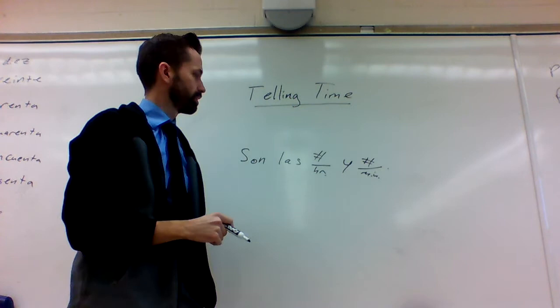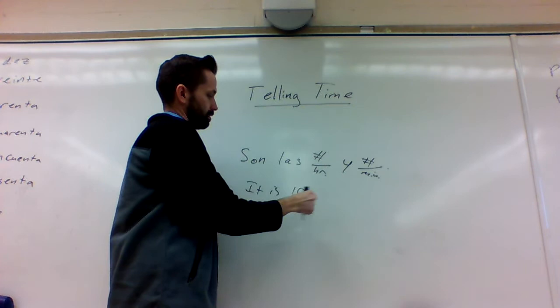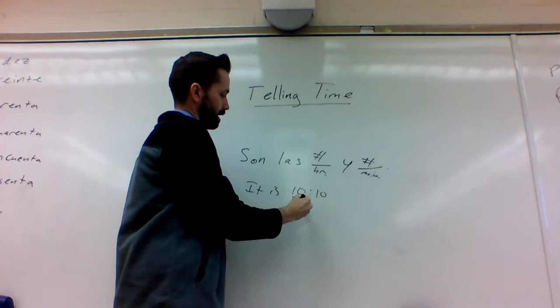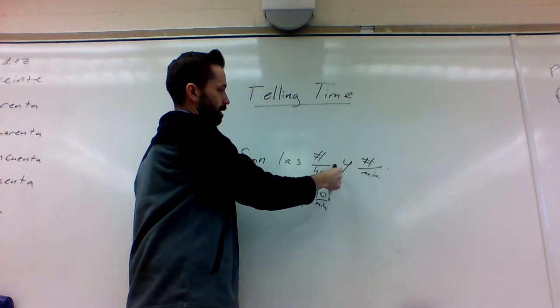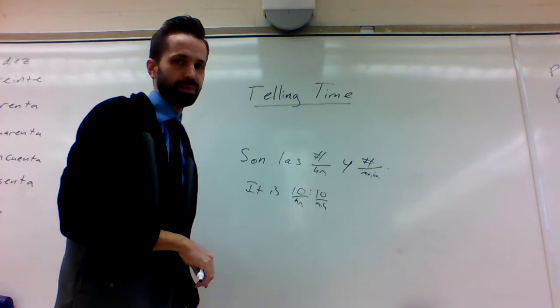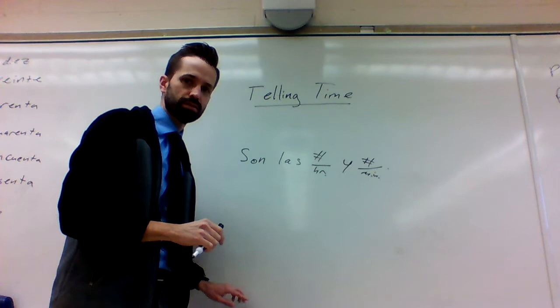So in English you would just say it is 10 and then you say another number for the minutes. You just say the number here for the hour and for the minutes. It's almost the same except you say it is the number for the hour and the word and then the minutes. So it is 10 and 10 instead of it is 10 10. This will cover most situations throughout the day.